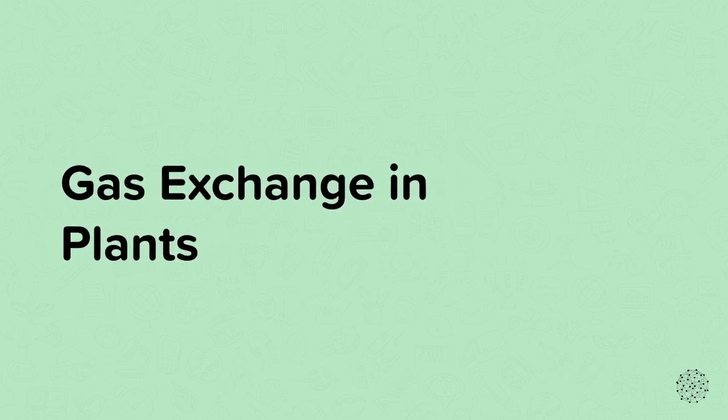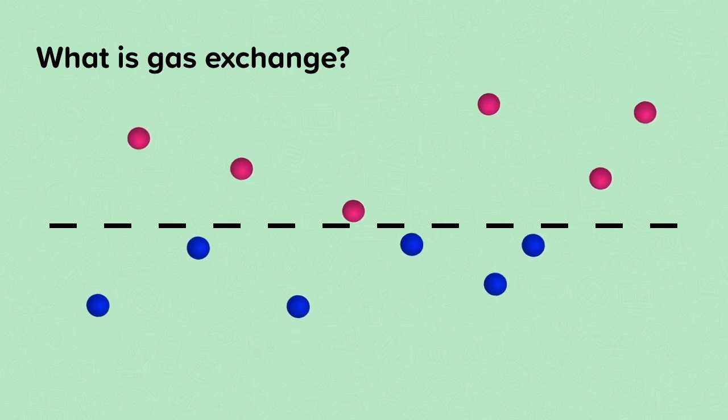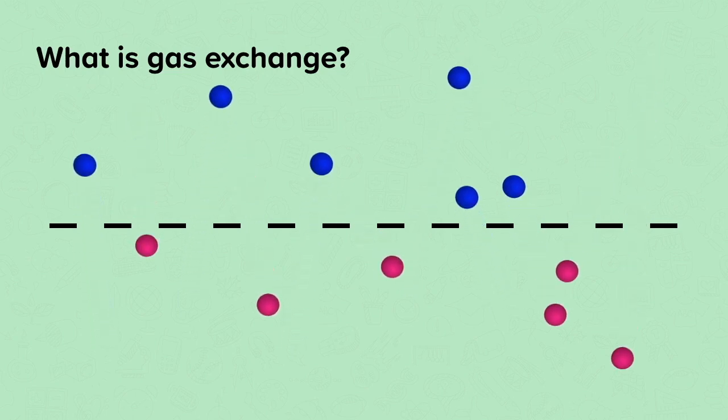In this nugget, we're going to look at gas exchange in plants. Firstly, what is gas exchange? To exchange means to swap. Gas exchange is when gases swap over across some sort of surface, for example, a cell membrane. Plants exchange carbon dioxide and oxygen with the air or water, just like animals do.